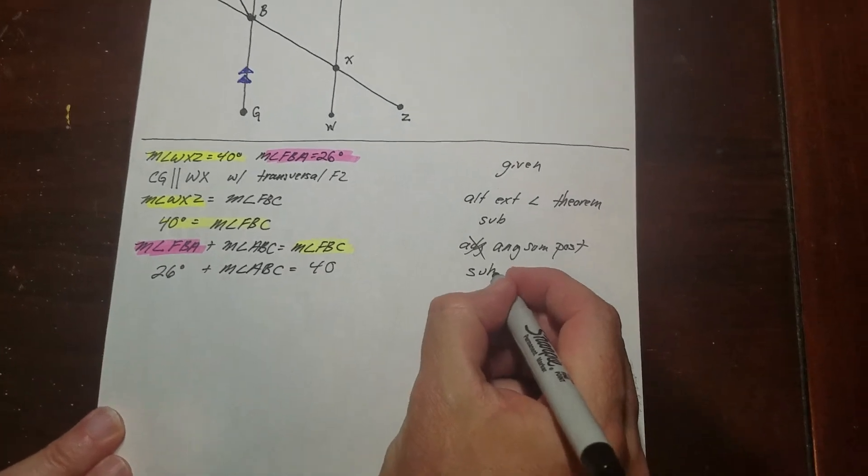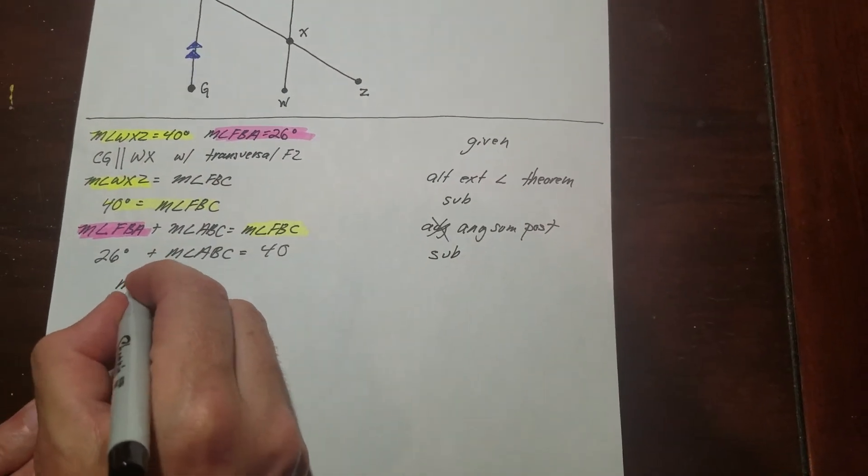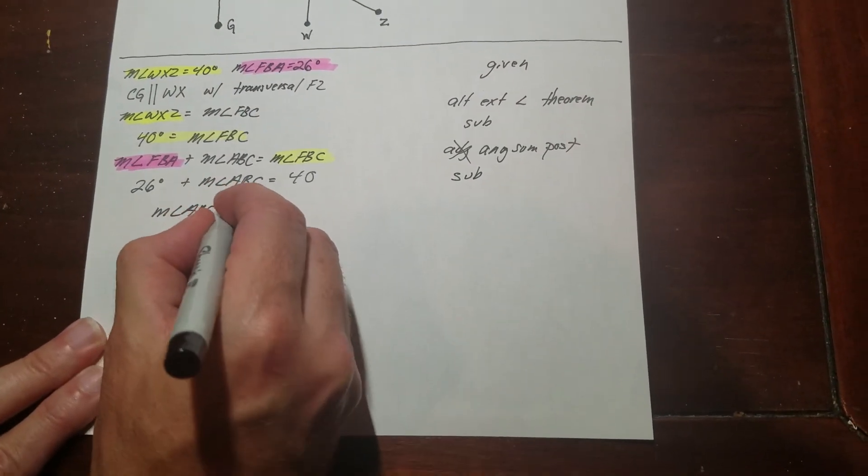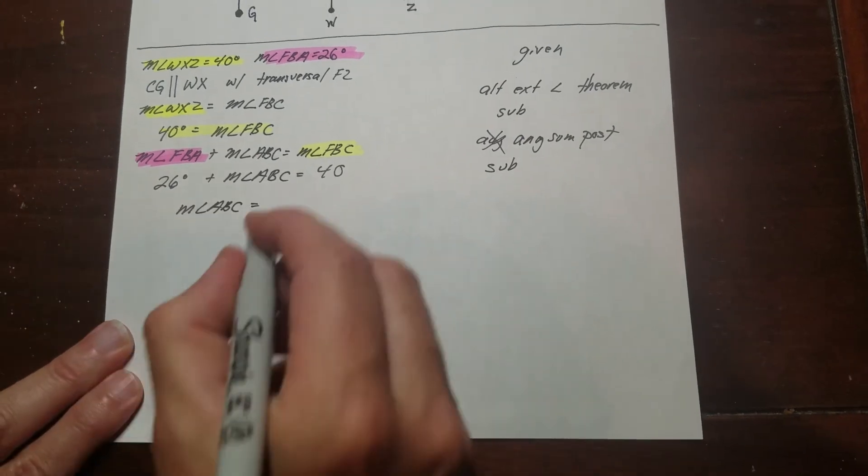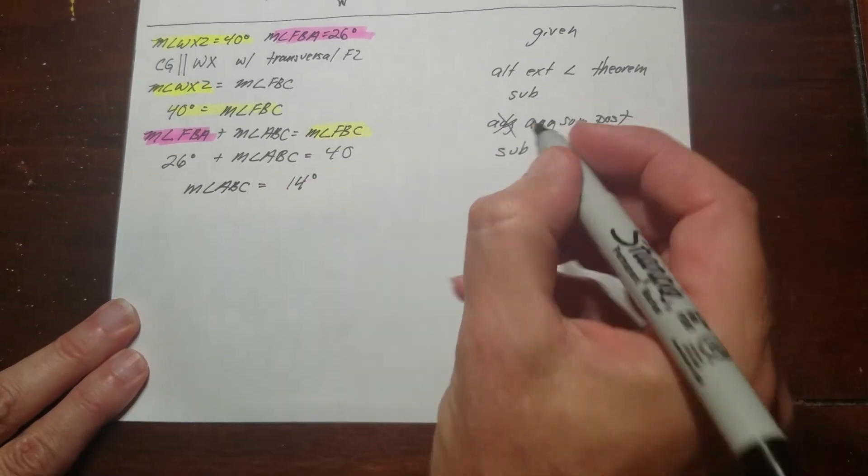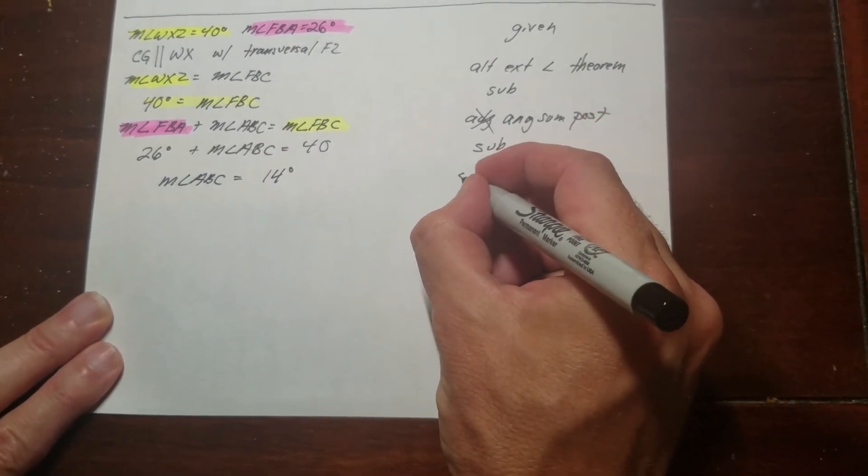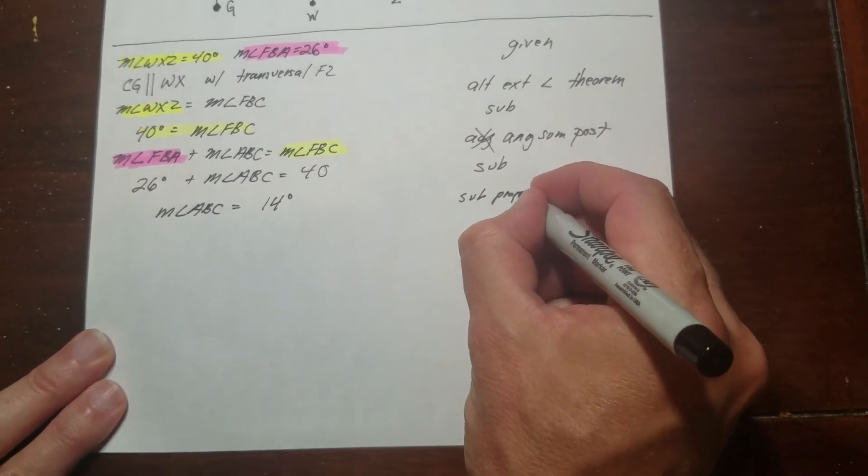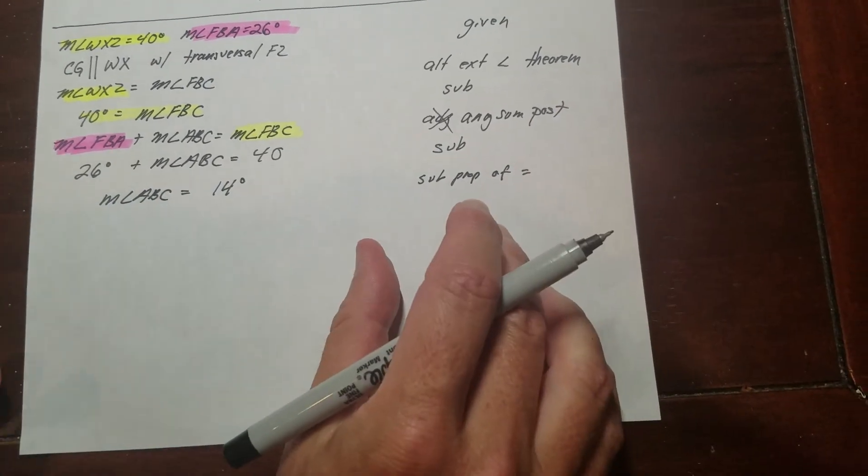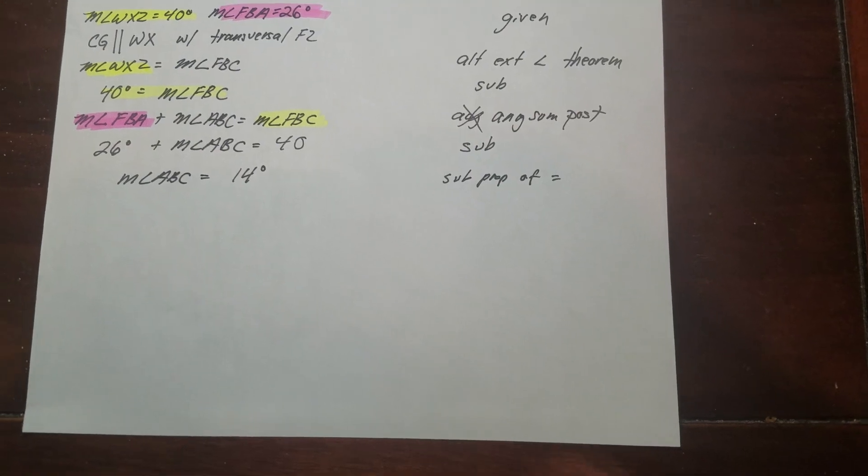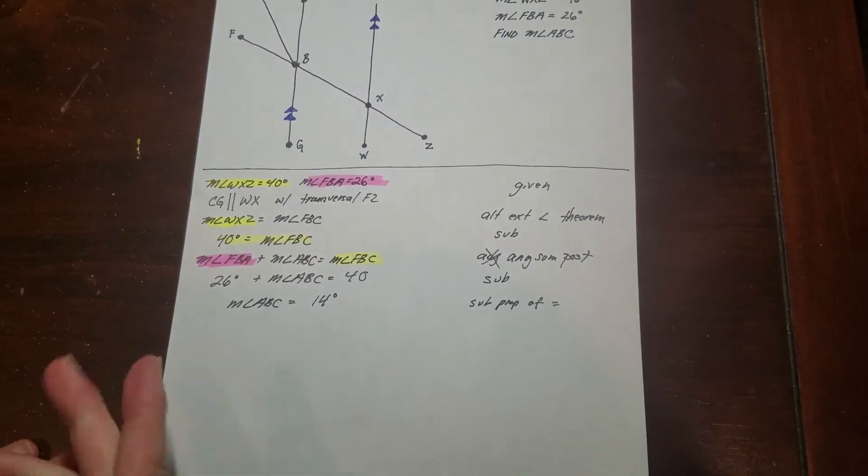And then the very last one, all I've got to do is reverse this. So 40 minus 26 is 14 degrees. And that is the subtraction property of equality. And that's what I set out to find. So that's how you do it.